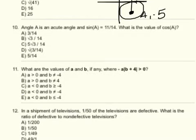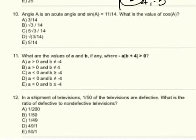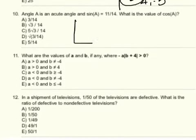Now, number 10, angle A is an acute angle and sine A is 11 over 14. What is the value of cosine A? We'll just draw you a right triangle, like this. And let's make this angle A. So if that's angle A and sine A is 11 over 14, that's opposite over hypotenuse.